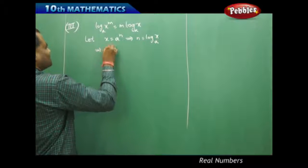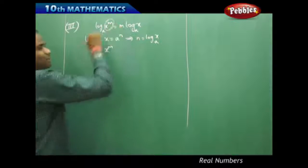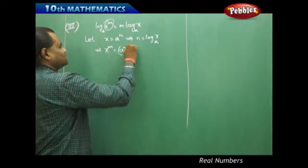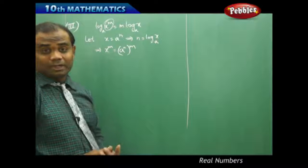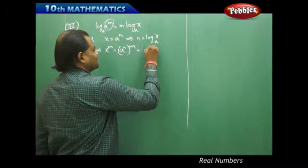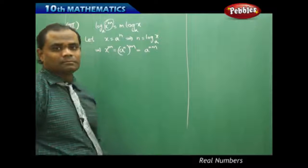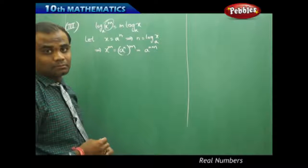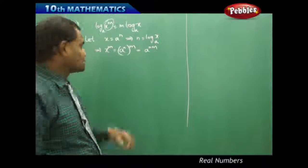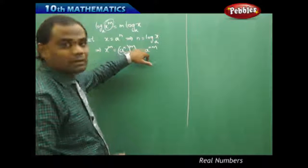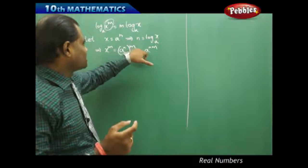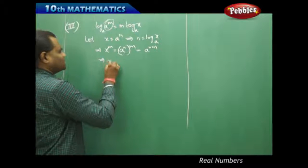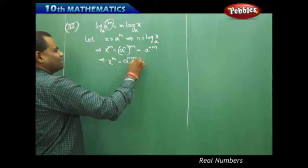That implies, because I need x to the power m, I am going to raise x to the power m, so that equally on the right this gets raised to power m. This would be nothing but a to the power nm. Both the powers get multiplied — this doesn't become n to the power m, which is a common mistake. So n times m gives a power nm.